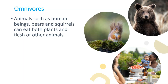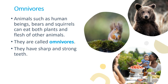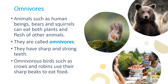Animals such as human beings, bears and squirrels can eat both plants and flesh of other animals. They are called omnivores. They have sharp and strong teeth. Omnivorous birds such as crows and robins use their sharp beaks to eat food.